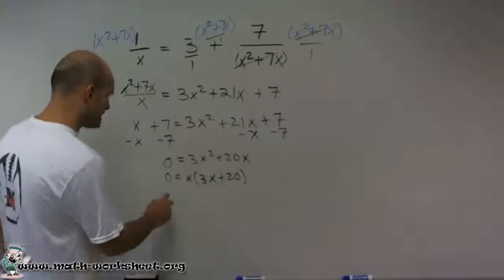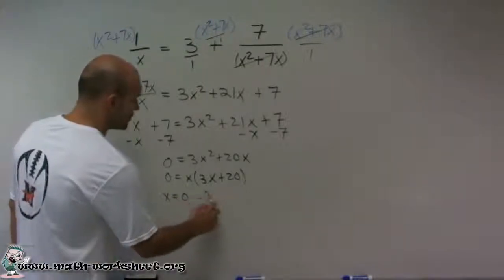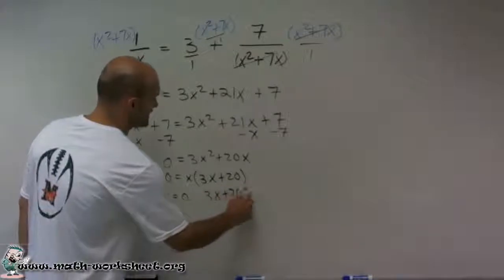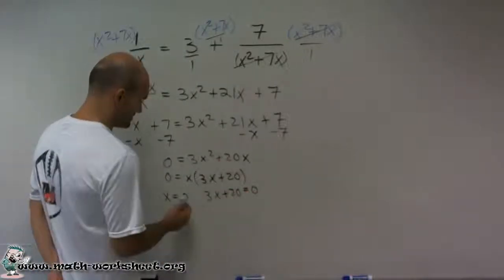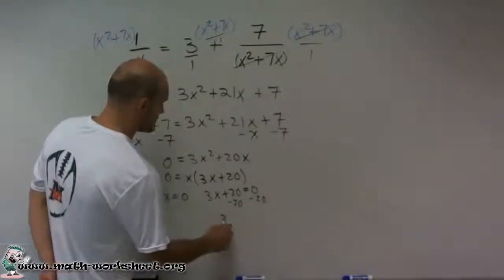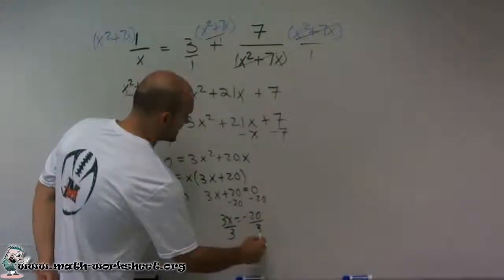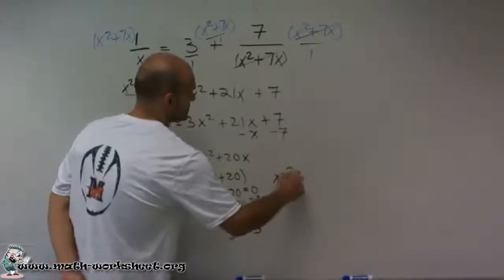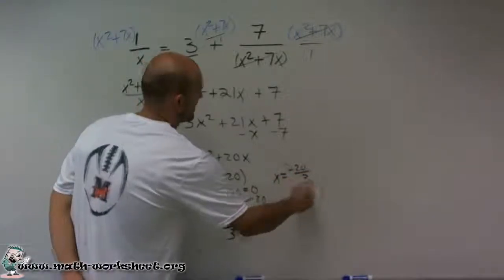Then by using the zero product property, I can say x equals 0 and 3x plus 20 equals 0. Now by solving for x, this is already solved for x, I'll subtract 20. So I get 3x equals negative 20 divided by 3, x equals negative 20 divided by 3. So I have two solutions.